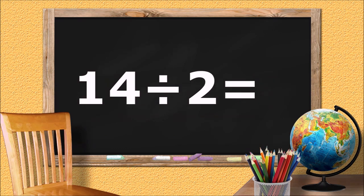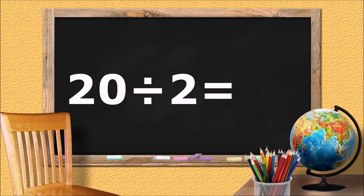Fourteen divided by two equals... seven. 20 divided by 2 equals... 10.